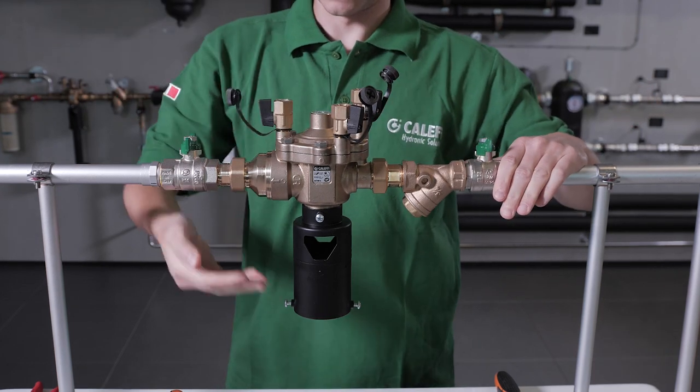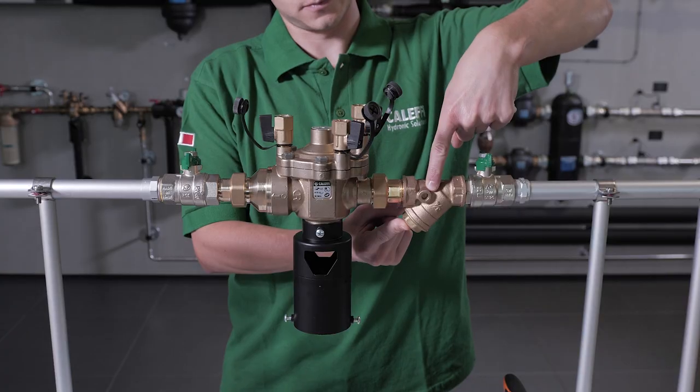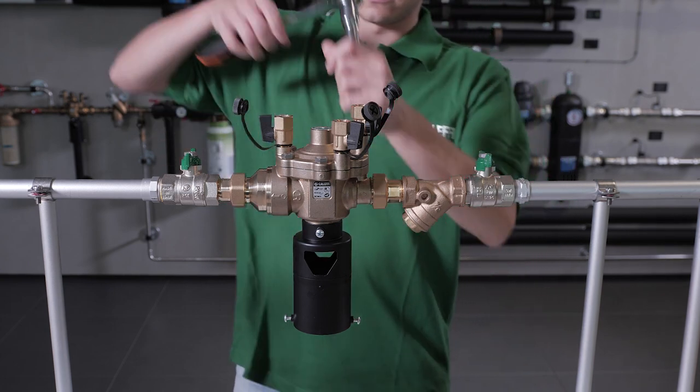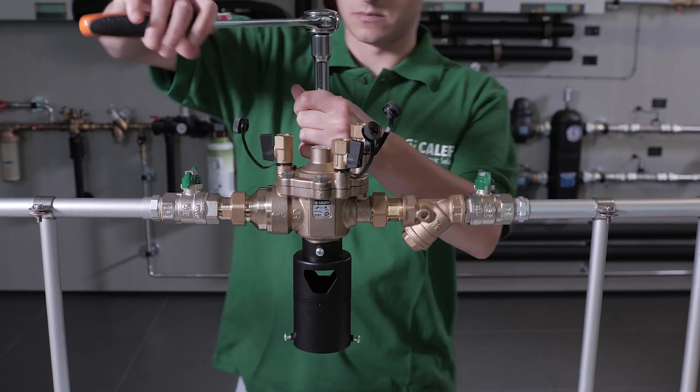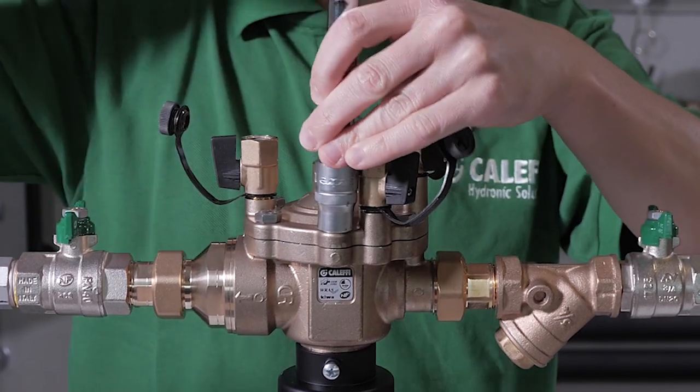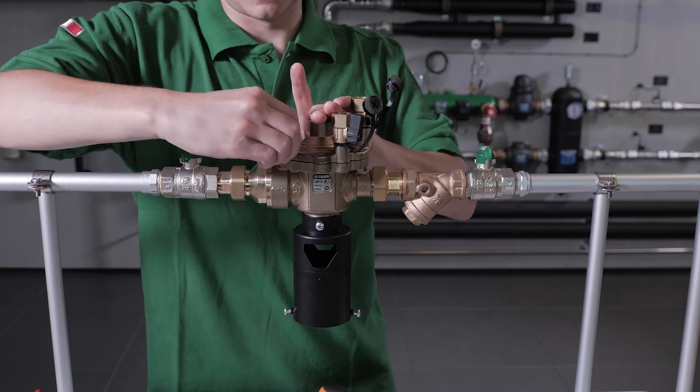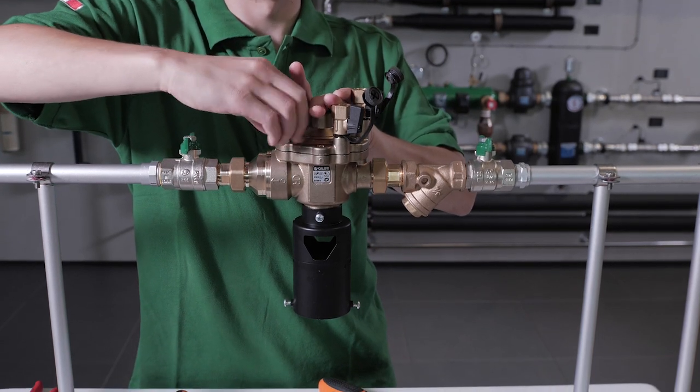At this moment, it is possible to conduct maintenance of the Y strainer by removing the seal and the screws. It is possible to completely open the unit by removing the upper part. Pay attention to